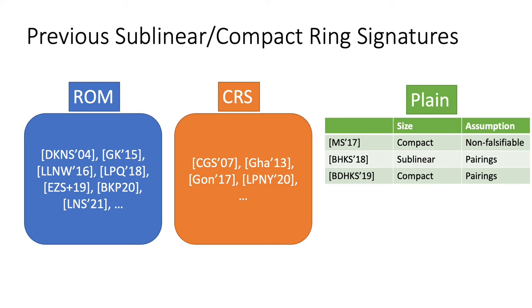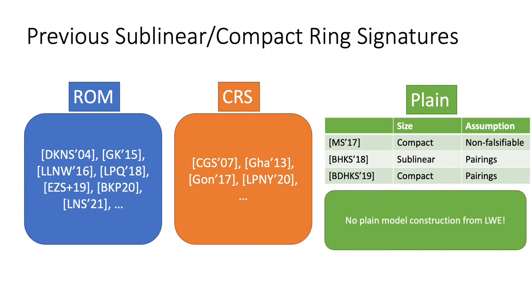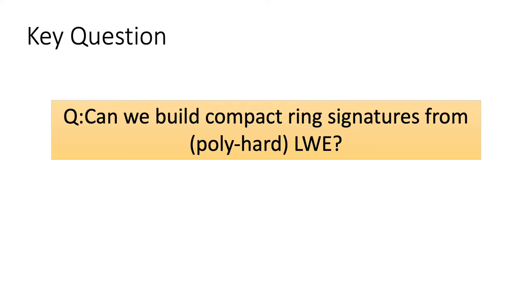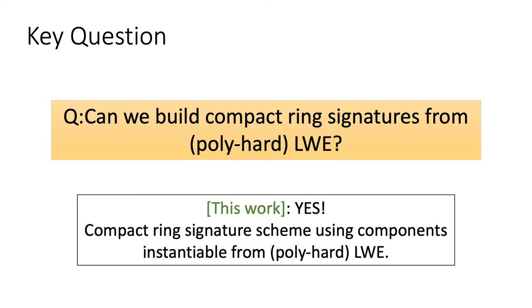Recall that compact signatures grow polylogarithmically in the ring size, while sublinear signatures grow sublinearly. Of note are the works by Malavolta and Schroeder, who built a compact ring signature using a knowledge of exponent assumption; Bakers, Hanjlik, and others, who built a sublinear ring signature based on pairings; and finally Bakers, Dortling, and others, who give a compact ring signature based on pairings, which is of closest interest to us. However, in work so far, there is no compact ring signature construction in the Plain model instantiable solely from LWE. This brings us to the key question we address in this work: can we build compact ring signatures from polynomially hard LWE? And in this work, we do show how to construct a compact ring signature scheme using components instantiable from polynomially hard LWE. So the answer is yes.